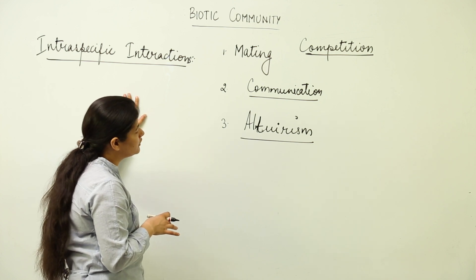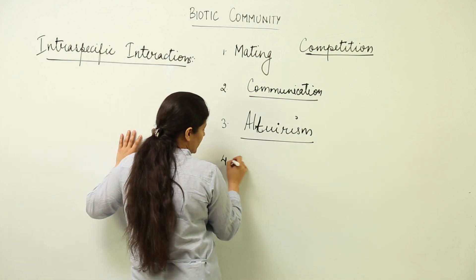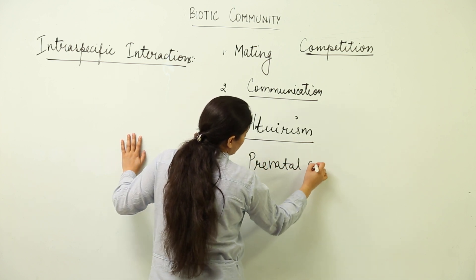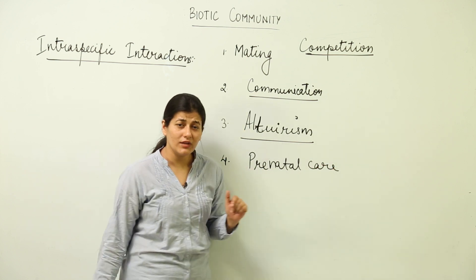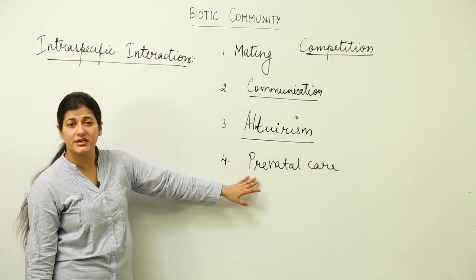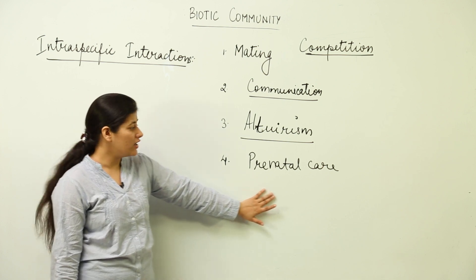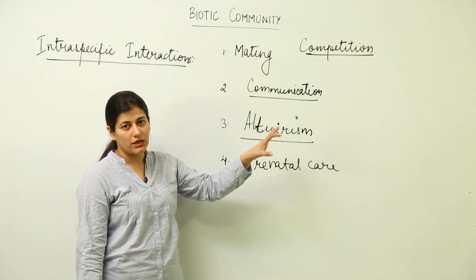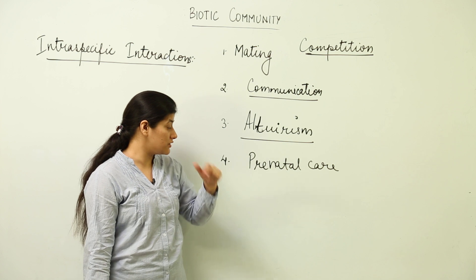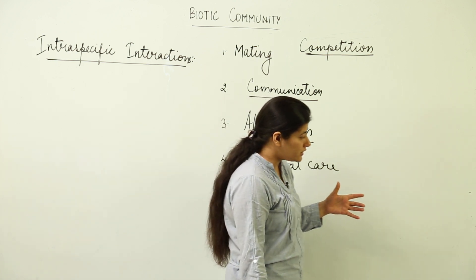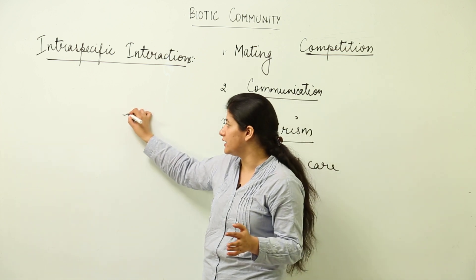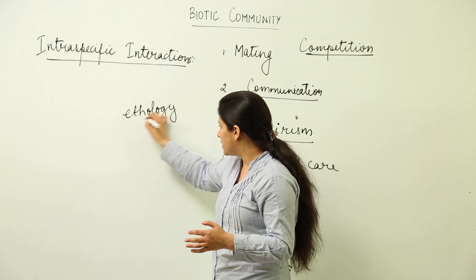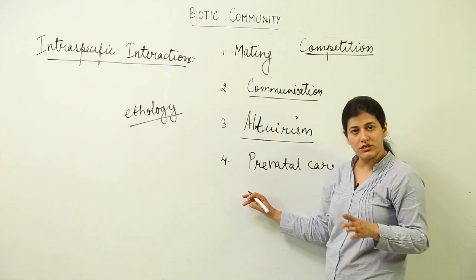So we have mating, communication, and altruism. Another type of social behavior that organisms show is prenatal care. Often the female shows prenatal care, and the male also shows prenatal care to the female counterpart, so that healthy offspring are born. These are the few intraspecific interactions to keep in mind. The entire subject of ethology — studying animal behavior — is quite diverse, so I have restricted you to these four terms.